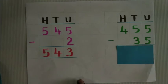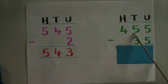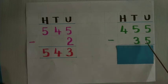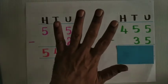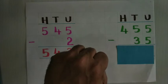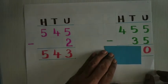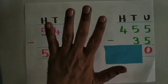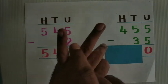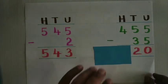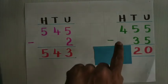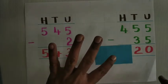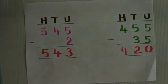The answer will be 543. Next: 455 minus 35. 5 minus 5 is 0. 5 tens minus 3 tens gives 2. 4 hundredths minus 0 means 0 — so 4 minus 0 is 4. Four hundred and twenty is the answer.